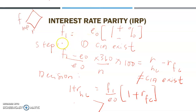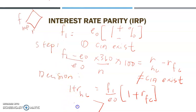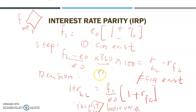Just like I mentioned on the previous slide, we have step one — you need to prove CIA exists or not, and then we proceed with the decision. If your left side is bigger than your right side, it means our home country rate is much bigger than our foreign currency rate, so it's better for us to invest here — to invest home and to borrow foreign. And vice versa: if your home country interest rate is much cheaper, better we borrow home and invest in a foreign country.